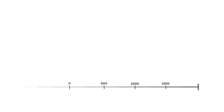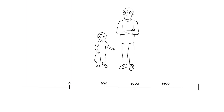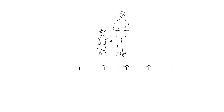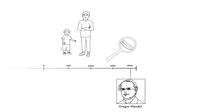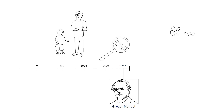For centuries, people have noticed the resemblance between parents and offspring in different organisms. About 150 years ago, a monk named Gregor Mendel took a closer look at these patterns of inheritance by studying peas that he grew in the monastery's garden. By crossing plants with a distinct characteristic — for example, a tall plant and a short plant — he noticed something interesting.